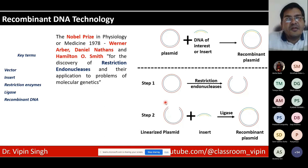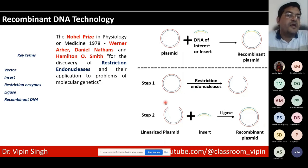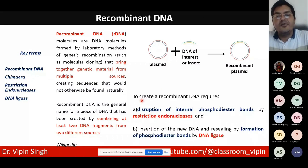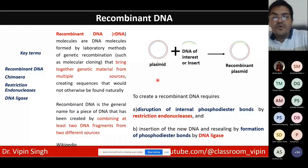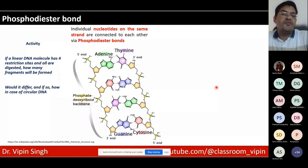The discovery of restriction endonucleases in bacteria was a key turning point in molecular biology technology. Along with DNA ligase, these enzymes enable creation of new DNA combinations. In recognition of this fundamental discovery, Werner Arber, Daniel Nathans, and Hamilton Smith were awarded the Nobel Prize in Physiology or Medicine in 1978. Creating recombinant DNA requires disruption of internal phosphodiester bonds by restriction endonuclease and resealing by DNA ligase.